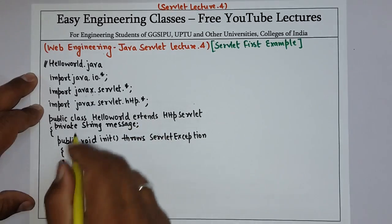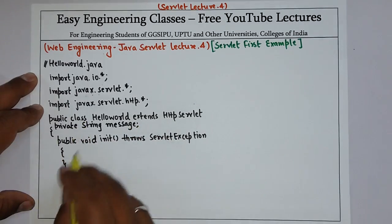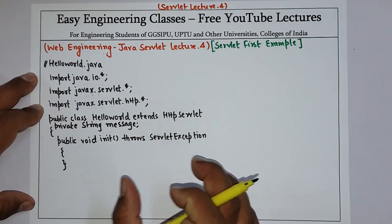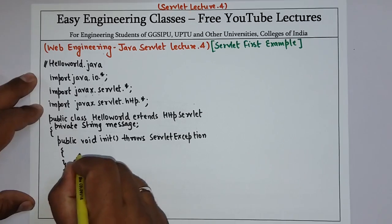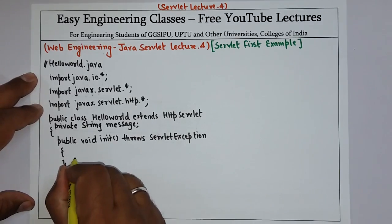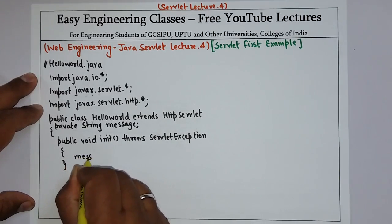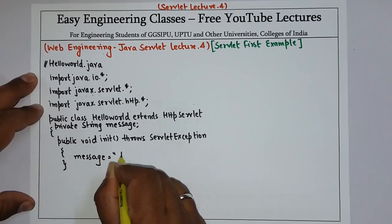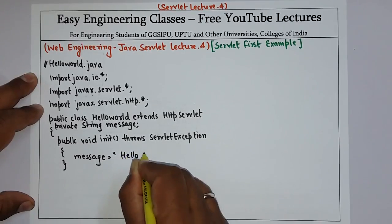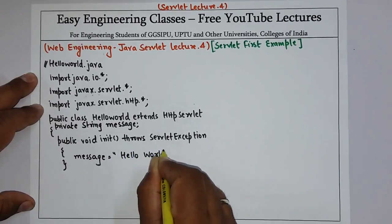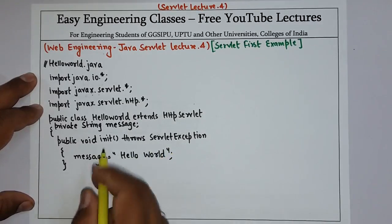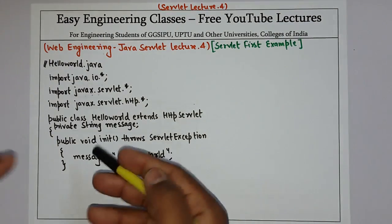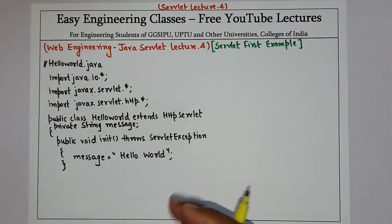This message variable is created inside the class and we want to initialize it with the string value Hello World. So inside the init method write: message = "Hello World". That is how you can initialize variable values in the init method.